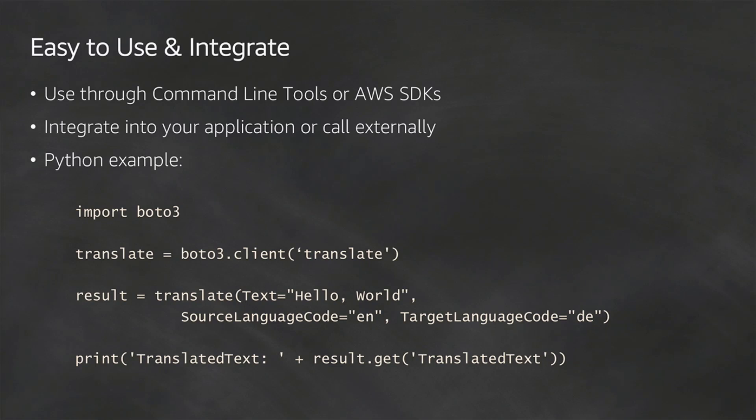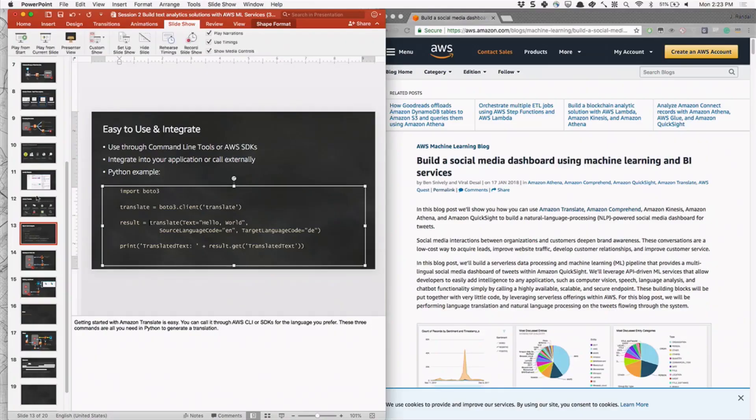We just import Boto3, create an object called translate client — straightforward. This is translating from EN to DE.